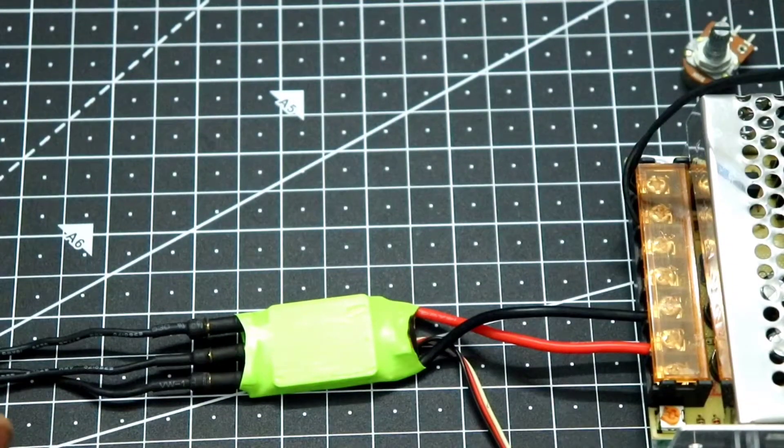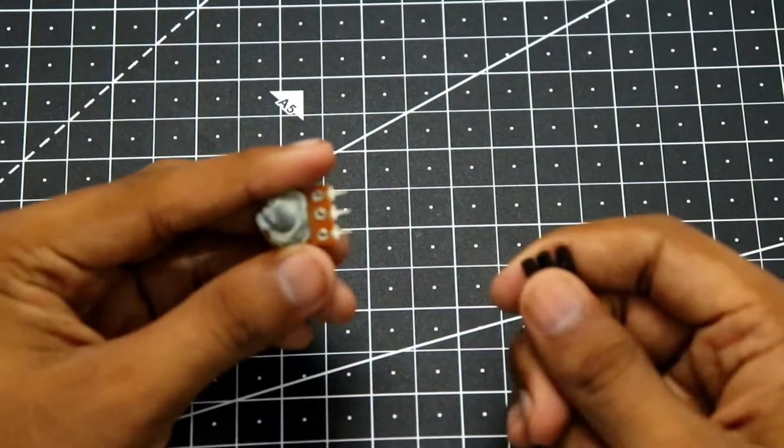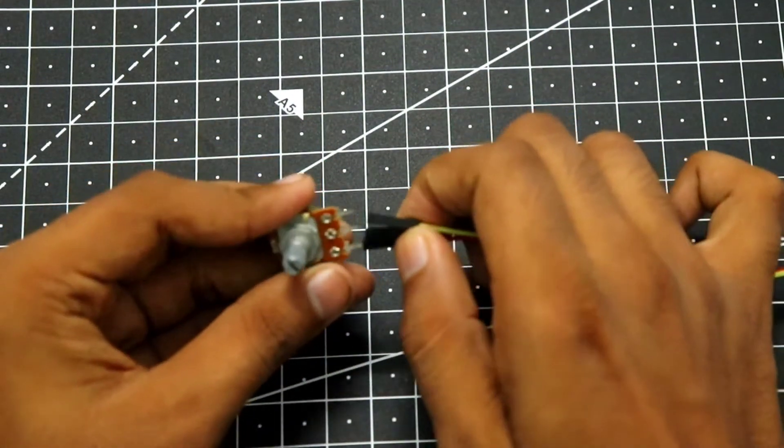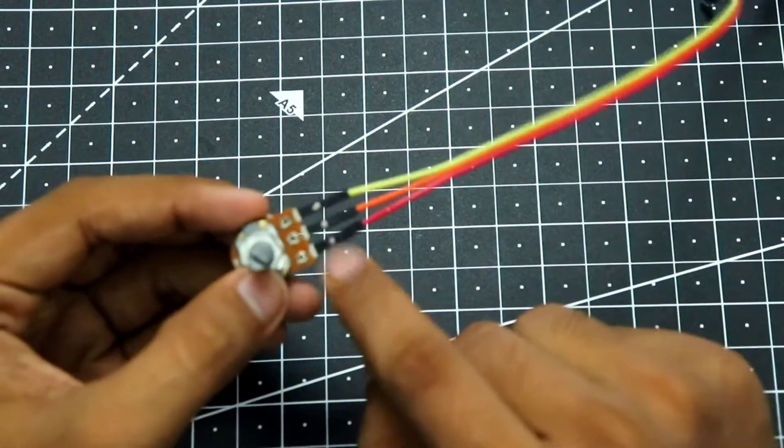Now let's move on to the potentiometer. This is a simple potentiometer and these are some jumper cables. Let's connect them to the potentiometer, just like so. Now we can connect these to the Arduino.